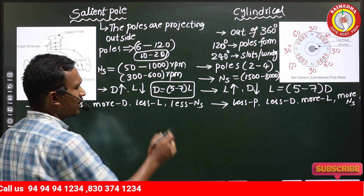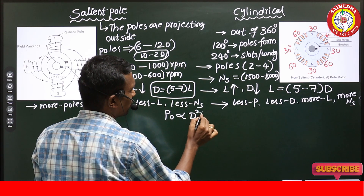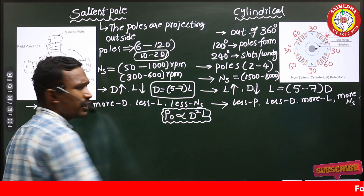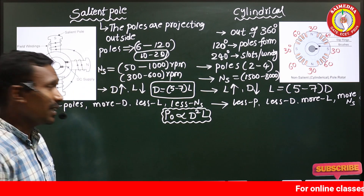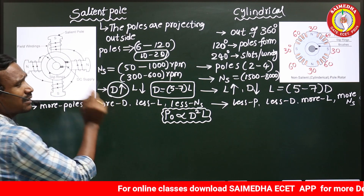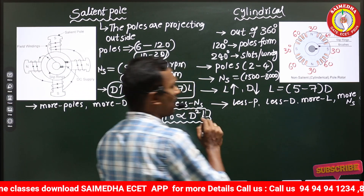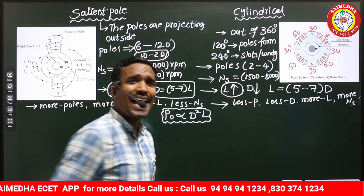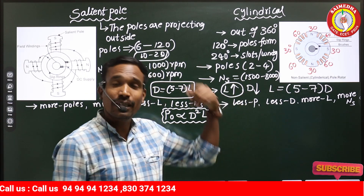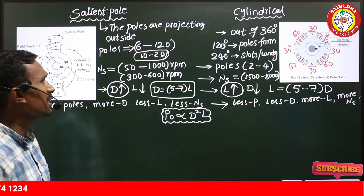The power output is generally directly proportional to D² × L. In order to get more power output in the salient pole machine we need to maintain a larger diameter, while for the cylindrical machine — where diameter is less — we need to maintain a greater axial length to achieve better power output.